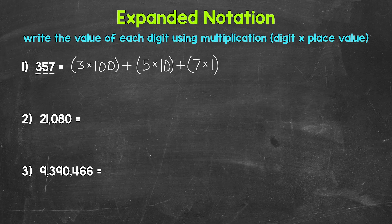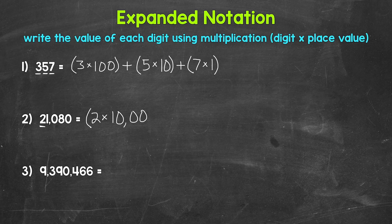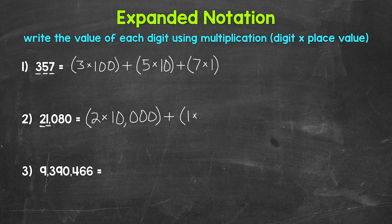Moving on to number 2. We have 21,080. Let's start with the furthest digit to the left — this 2 right here. That 2 is in the tens thousands place, so times 10,000. This 2 has a value of 2 tens thousands, two groups of 10,000, which is 20,000. Our next digit — plus — and then our next digit is this 1 right here. And then that 1 is in the thousands place, so we need to multiply by 1,000.